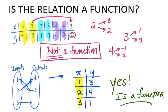Here's a useful trick: if your inputs don't repeat, you're done — each input has exactly one output. If you put in 1, you get out 3 and only 3. If you put in 2, you only get out 4. If you put in 3, you only get out 1. Each input has exactly one output.